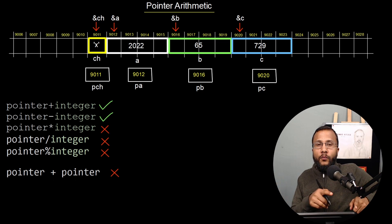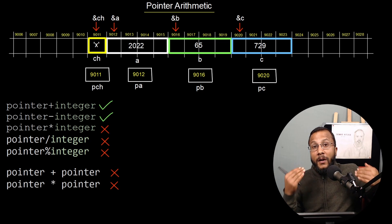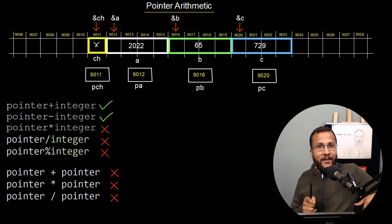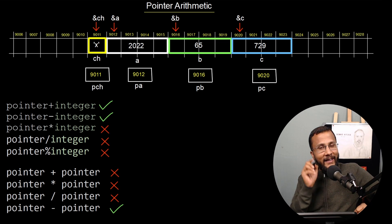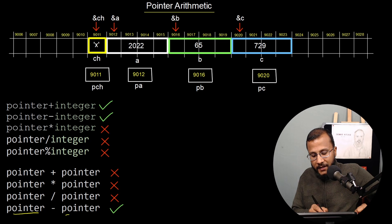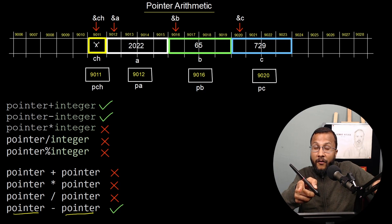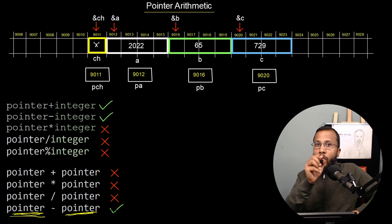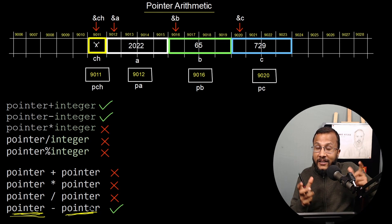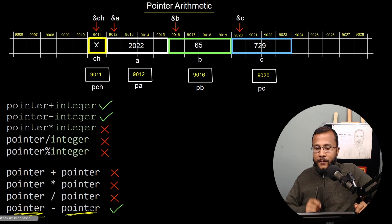Similarly, you cannot add two pointers — that is not allowed. You cannot multiply two pointers and you cannot divide two pointers. But what is allowed is you can subtract two pointers together: pointer minus pointer is a valid statement, provided both pointers are of the same type. That means they should be pointing to the same type of variable. If one pointer is pointing to an integer, the second must also point to an integer. If they are of different types, subtraction is not allowed.